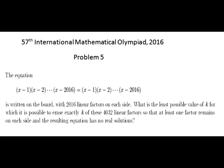The equation (x-1)(x-2)...(x-2016) equals the same expression is written on the board with 2016 linear factors on each side. What is the least possible value of k for which it is possible to erase exactly k of these 4032 linear factors, so that at least one factor remains on each side, and the resulting equation has no real solutions?